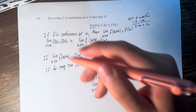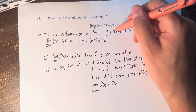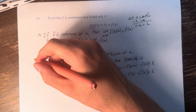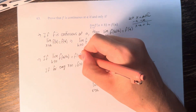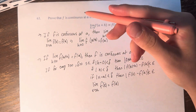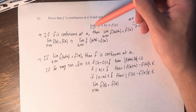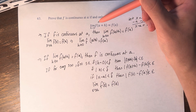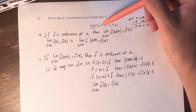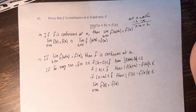Therefore, we've proved that if f is continuous then this limit exists, and if this limit exists then f is continuous. We've proven that f is continuous at a if and only if the limit as h approaches 0 of f of a plus h is equal to f of a.